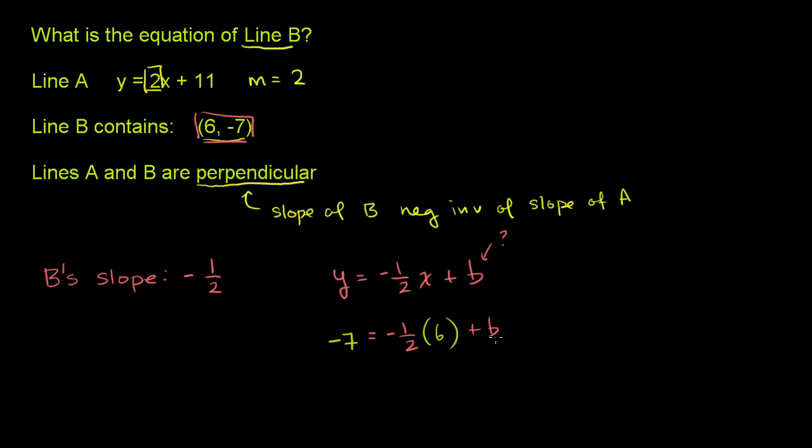So let's work out what b must be, or what the b, the y-intercept—this is the lowercase b, not the line B. So we have negative 7 is equal to, what's negative 1/2 times 6? That's not a B there, that's a 6. What's negative 1/2 times 6? It's negative 3. It's equal to negative 3 plus our y-intercept.